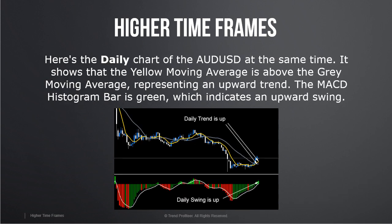Here's the daily chart of the Aussie at the same time. It shows that the yellow moving average is above the grey moving average, representing an upward trend. The MACD histogram bar is green, which indicates an upward swing. So the daily trend is up and the daily swing is up.